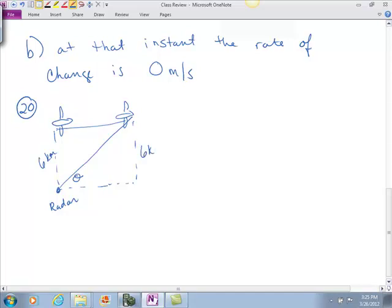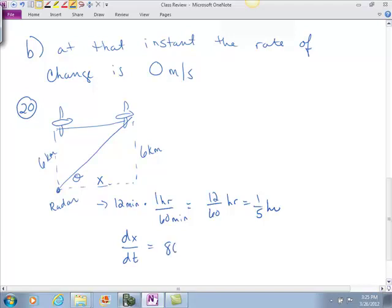How fast is theta changing 12 minutes after the plane passes over the radar station? So this is still going to be 6 kilometers. Now, 12 minutes have passed, which is 12 minutes times 1 hour over 60 minutes. So 12 sixtieths of an hour, which is 1 fifth. Let's call this distance x. We still have dx/dt is 800 kilometers per hour.